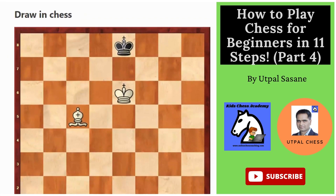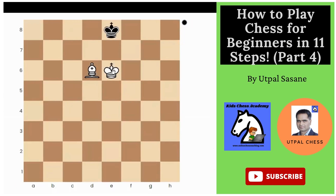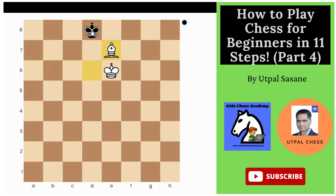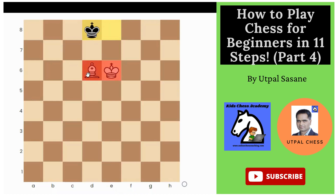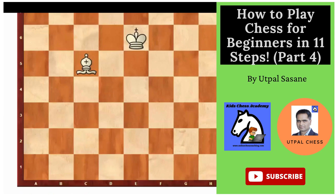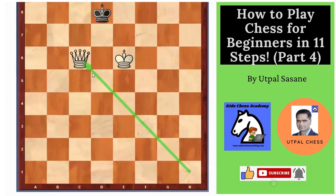Let's start with draw by insufficient mating material. We have this position on the board and it looks like White is winning, but it is actually a draw. Even if the bishop moves, it cannot give check to the king. The bishop can go here or here, but it won't result in checkmate — the king can always move. Because White doesn't have enough supporting pieces, these two pieces are not sufficient to force checkmate.